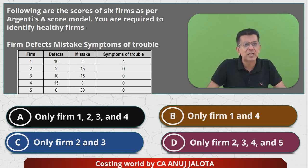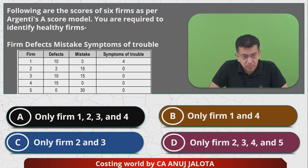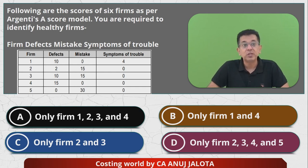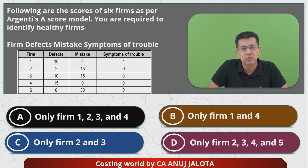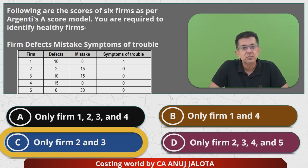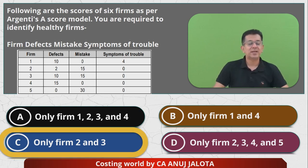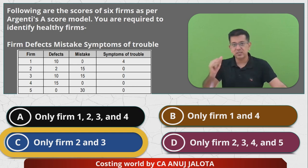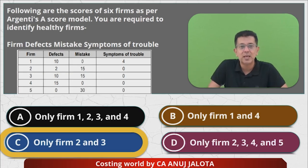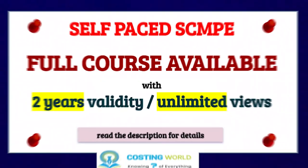So there are only two forms considered healthy: Form 2 and Form 3. The answer is option C — only Form 2 and Form 3 are healthy. That's the correct answer. I'll see you all next time with another question. Till then, happy learning, bye!